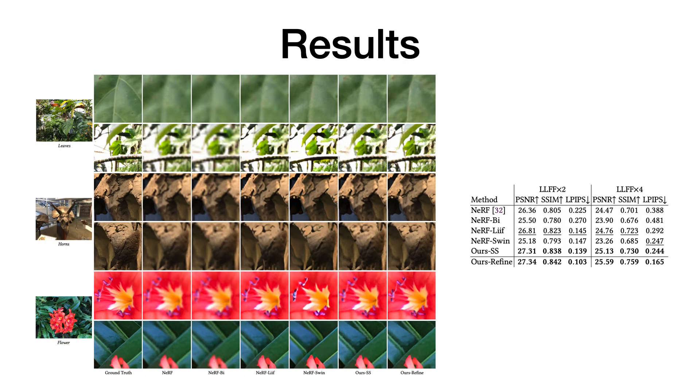This is the results of the LLFF dataset. We can see that NeRF and NeRF-BI suffer from blurry inputs. While NeRF-LIIF and NeRF-Swin recover some details and achieve satisfying visual quality, comparable LPIPS compared to our method, since they are trained on external datasets.